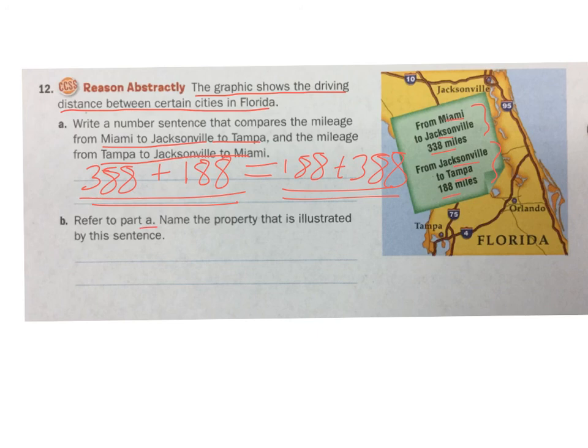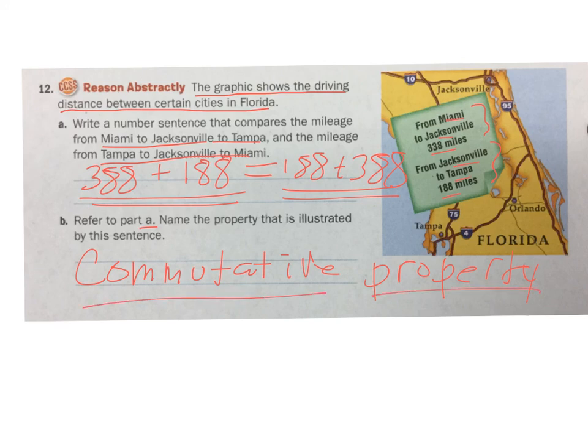Refer to part A, which is what we did. Name the property that is illustrated by this sentence. And I just did. Commutative property. Which states that it doesn't matter when you're adding which number comes first or second. They're going to be the same. Or if you're multiplying, it doesn't matter which one comes first or second. If you have any questions, let me know. Otherwise, you are all set to go to the hot problem table and work on number 13, 14, and 15.